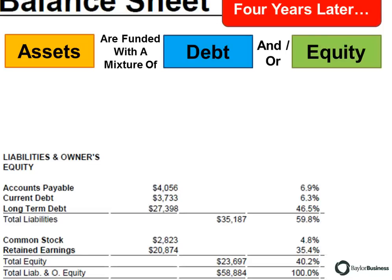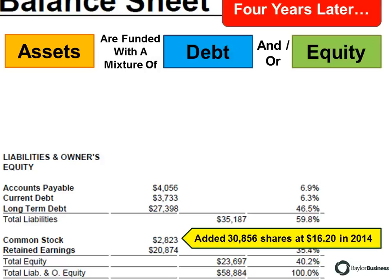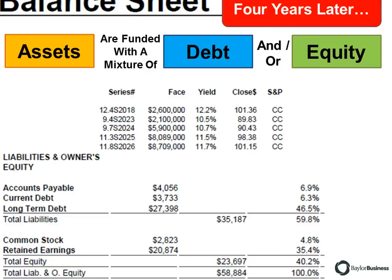Let's look four years later in 2016 to see how liabilities and owner's equity changed. Page two of the fast track shows they now have 2,030,856 shares. In 2014, this company floated shares to raise half a million in equity, which changed their common stock valuation on the balance sheet. But more notably, they took on a lot of debt — in fact, they quintupled their debt.